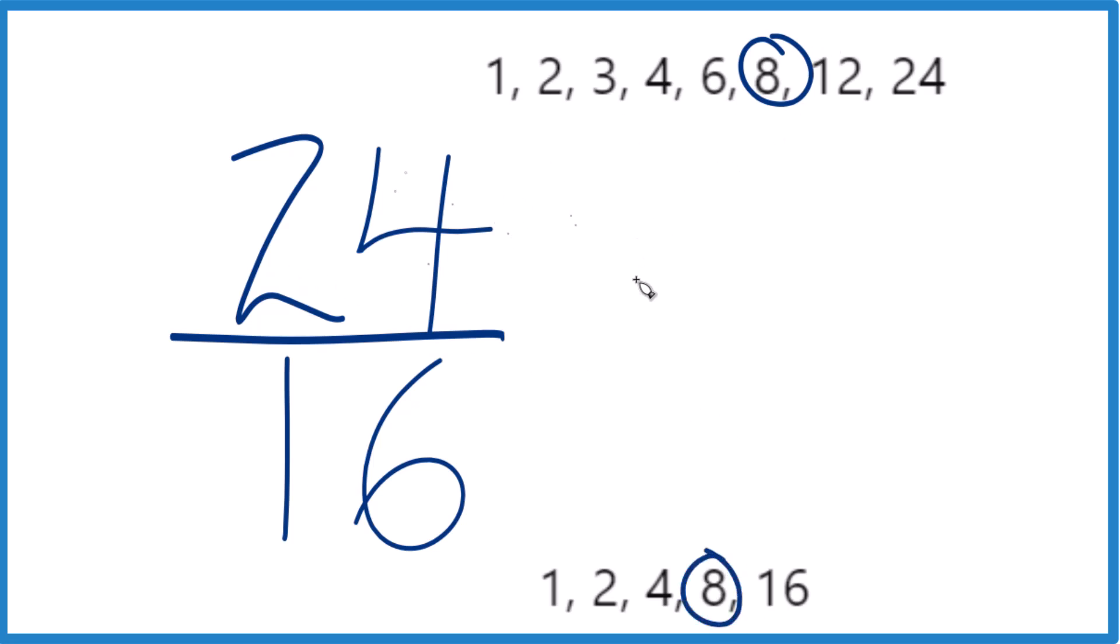So we divide 24 by 8, 24 divided by 8, that's 3, 16 divided by 8 is 2. So when we simplify 24 sixteenths, we get 3 halves. We can't reduce this any further.